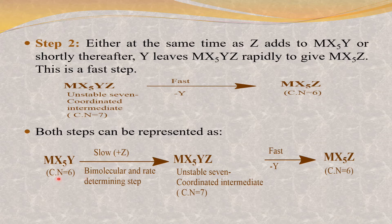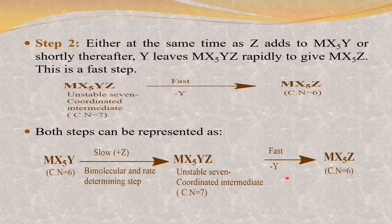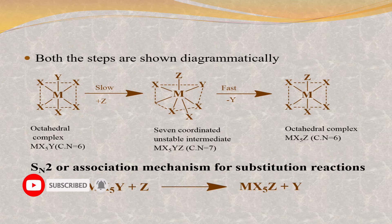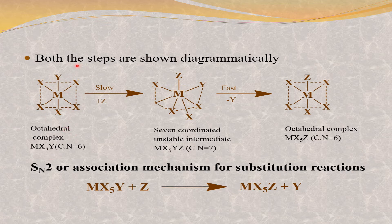The overall SN2 reaction can be summarized as follows: MX5Y (coordination number 6) undergoes the bimolecular rate-determining step where Z enters, forming the unstable 7-coordinated intermediate MX5YZ. Then in the fast step, Y leaves, giving MX5Z with coordination number 6. This is also shown diagrammatically here with respect to the octahedral complex, where Z attacks the octahedral complex in the slow step.